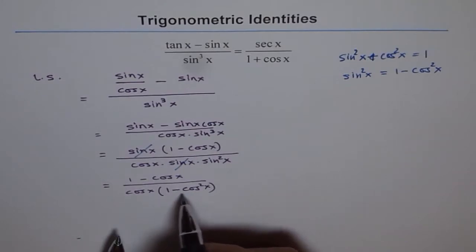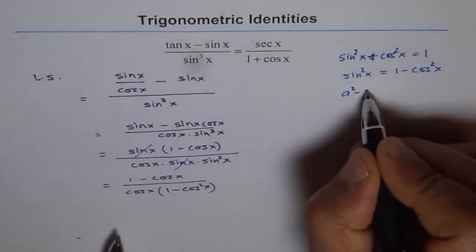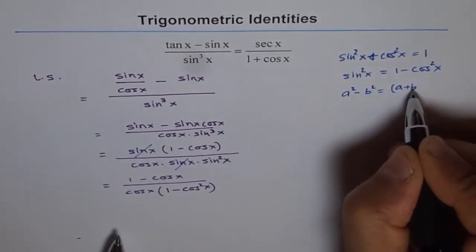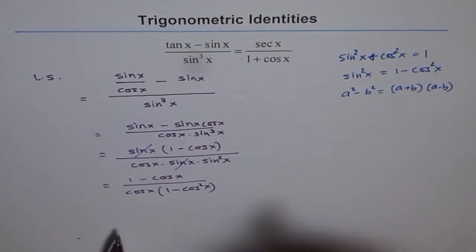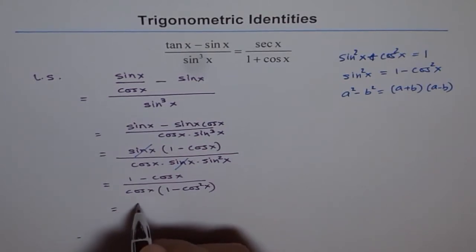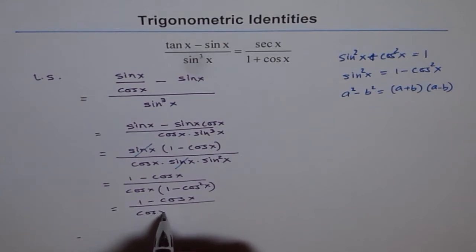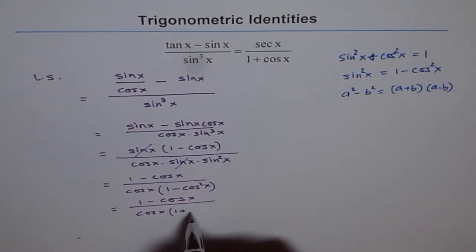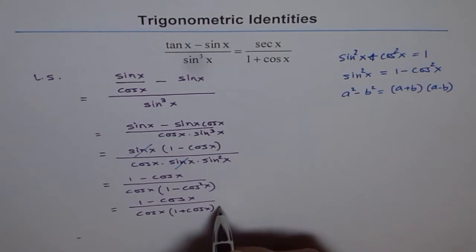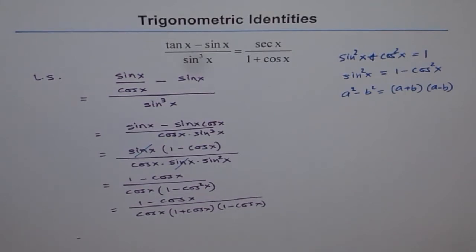Now 1 minus cos square x is a difference of squares. Since a square minus b square equals (a plus b)(a minus b), we can write 1 minus cos square x as (1 plus cos x)(1 minus cos x). So we have (1 minus cos x) over cos x times (1 plus cos x)(1 minus cos x).